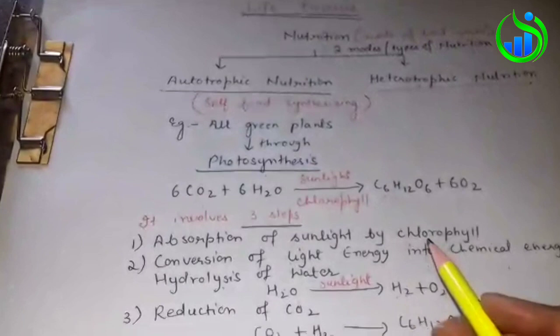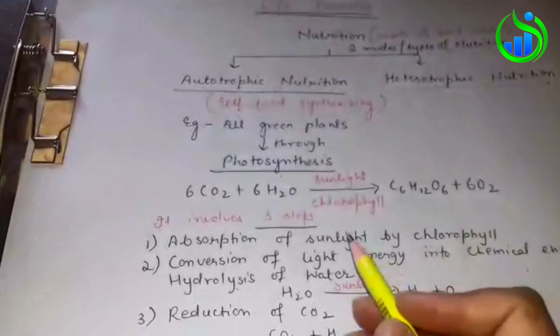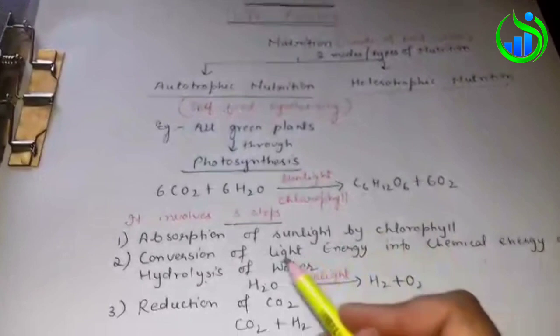In stomata, guard cells contain chloroplasts with chlorophyll, which can absorb sunlight and convert it into chemical energy. Step two is hydrolysis of water. Hydrolysis means water...